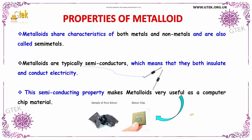Now let us discuss some of the properties of metalloids. Metalloids share some of the characteristics of both metals and non-metals, and are considered to be semi-metals. Metalloids are typically semi-conductors, which means they both insulate and conduct electricity. This semi-conducting property makes metalloids very useful as computer chip material — for example, the silicon chip.